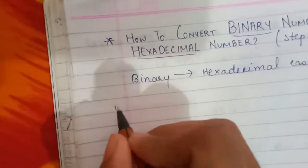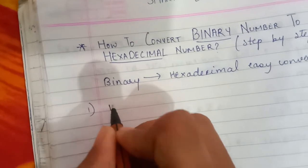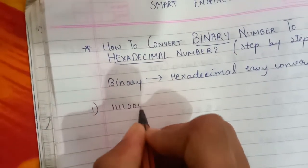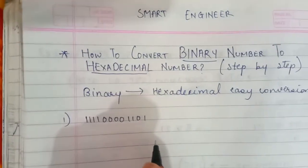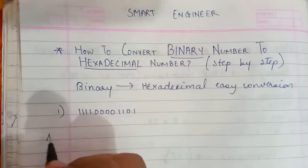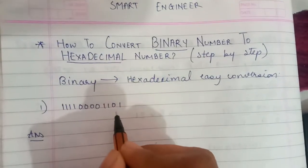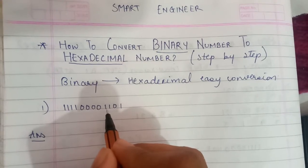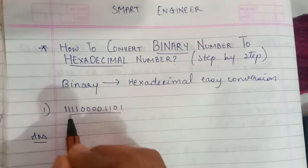We'll take the same example we used before. The binary number is 1 1 1 1 0 0 0 0 1 1 0 1. This is the binary number we have to convert to hexadecimal. To do so, we first have to divide the number into groups of 4, going from right to left.